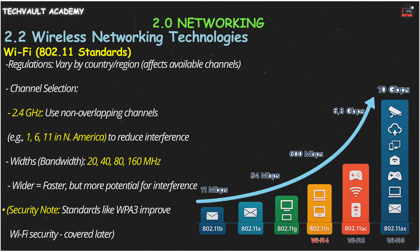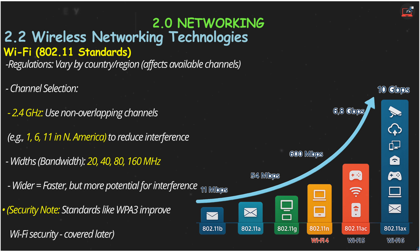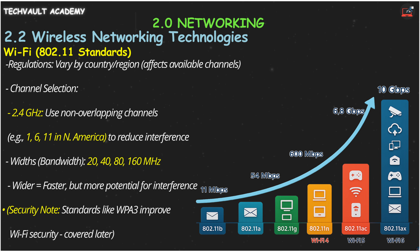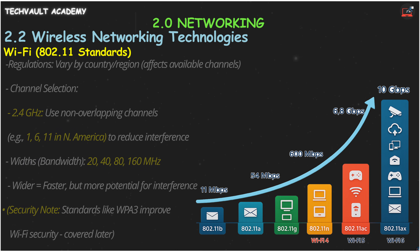Comparing the bands: 2.4 GHz has fewer unique non-overlapping channels and gets congested easily. 5 GHz offers many more channels and supports wider bandwidths. And the 6 GHz band, used by Wi-Fi 6E and 7, is the newest and widest, with lots of room and less interference. Briefly, while security is a deeper topic, remember different Wi-Fi standards also bring improved security options, like WPA3.